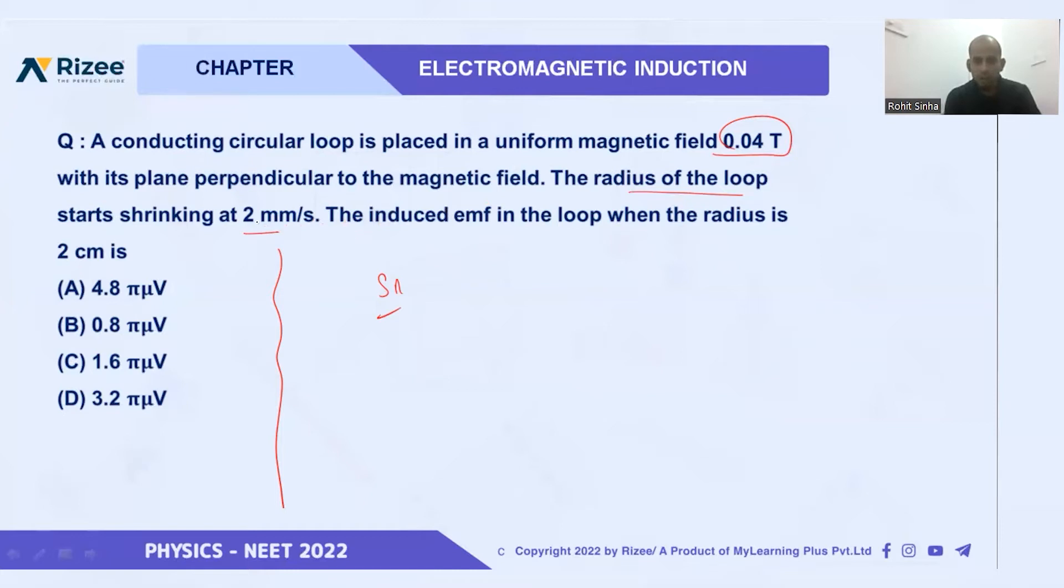But it is given that the radius of the loop is shrinking. That means dr/dt is given. You can see by the units also, dr/dt is given as 2 millimeters per second. And we have to find the induced EMF when the radius equals 2 cm.